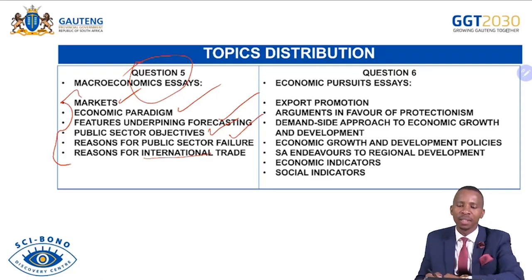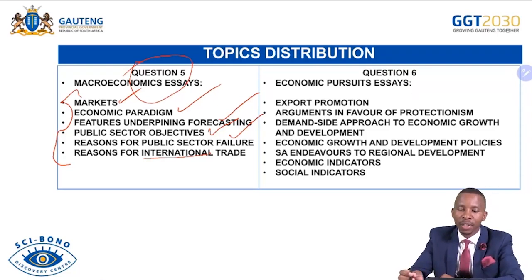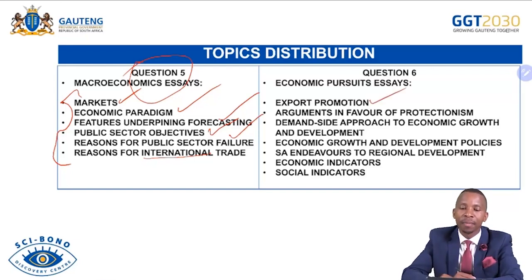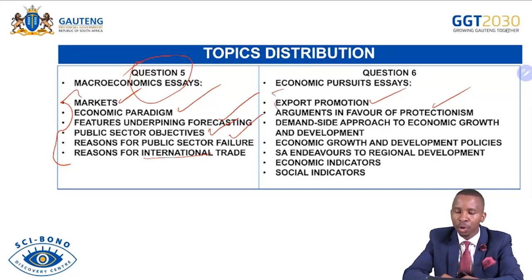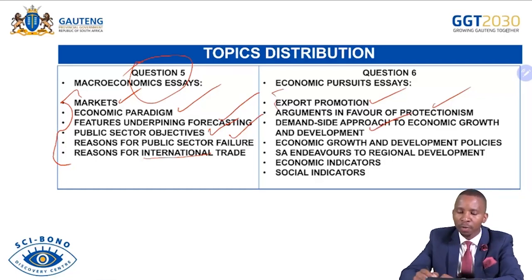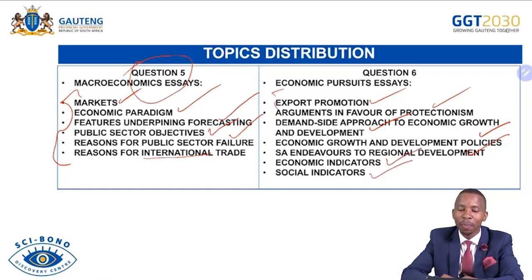For Question 6, consider: export promotion, arguments in favour of protectionism, demand-side approach to economic growth and development, economic growth and development policies, South African endeavours to regional development, economic indicators, and social indicators. Remember, in Section C you choose — between Question 5 and Question 6, you answer only one.